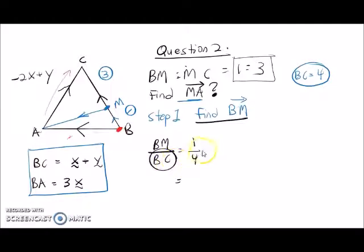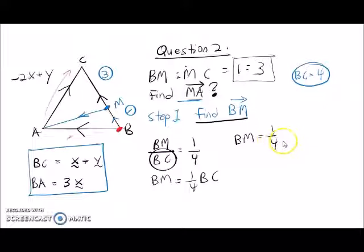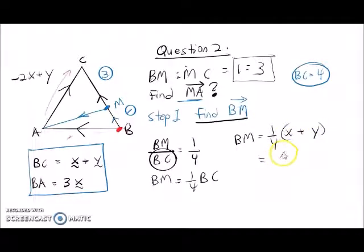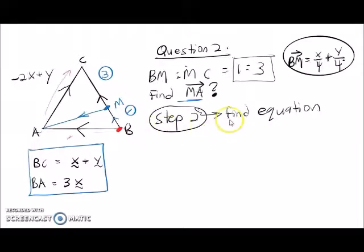BC moves to the other side so it becomes: BM equals one-quarter multiplied by BC. Since BC equals (x + y), putting it in brackets: BM equals x over 4 plus y over 4.